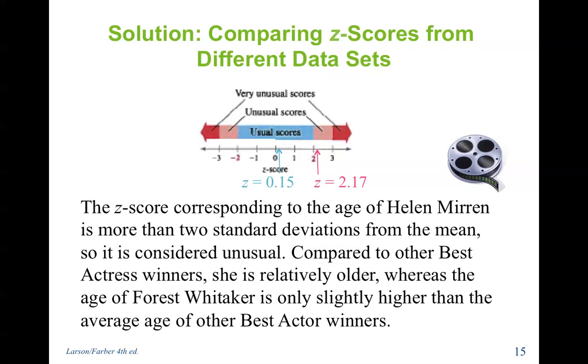So if we compare them, you would see that Forest Whitaker falls within 0.15 in the usual scores of his age. Now Helen falls out of two standard deviations, so she's in the unusual age for winning the Best Actress. And if someone falls beyond three, that is very unusual scores. So she is relatively older, whereas the age of Forest Whitaker is only slightly higher than the average age of other Best Actor winners.